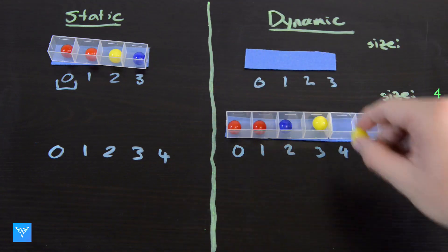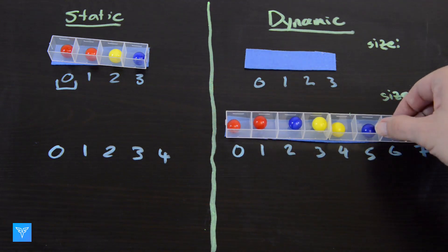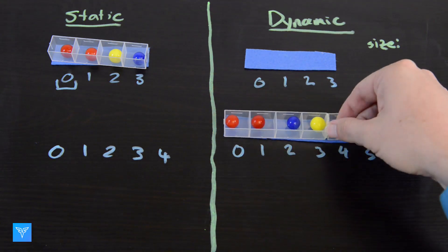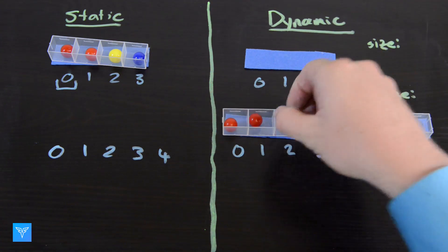The advantage is that we don't have to undergo this process every time we change the number of elements, only when we run out of room or when we are worried we are using too much space.